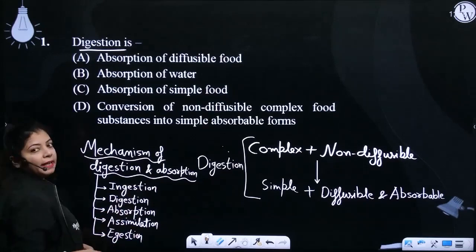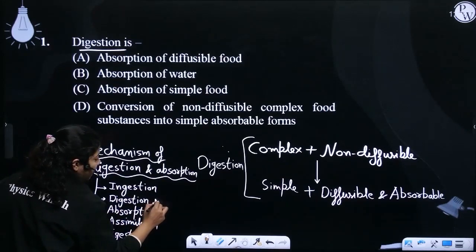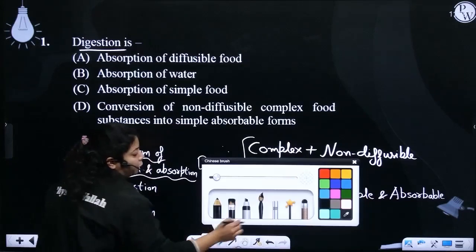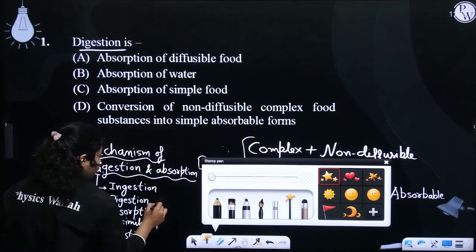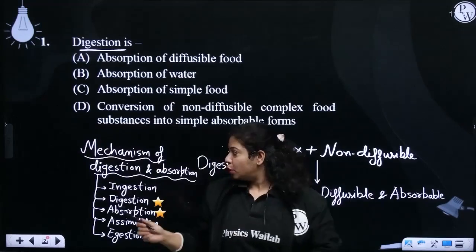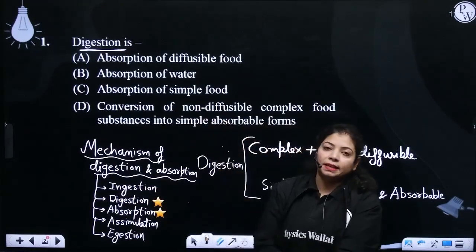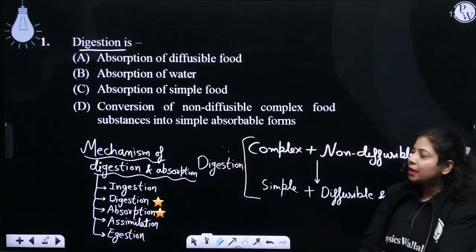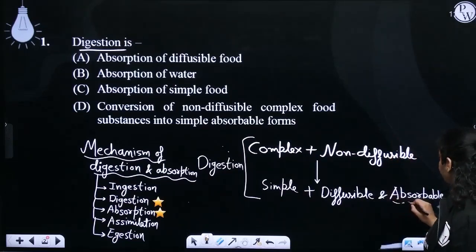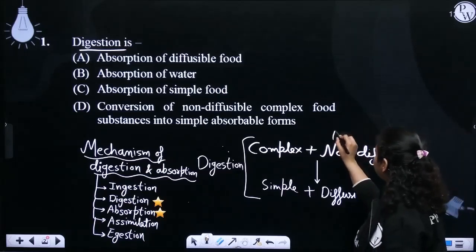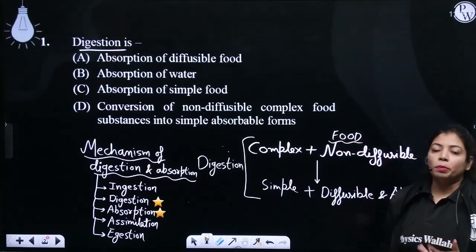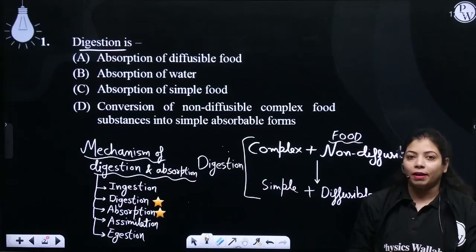आप इसमें देख सकते हैं कि digestion और absorption completely different processes हैं। यहाँ पर confuse नहीं होना है — one is digestion and another is absorption। Digestion और absorption different processes हैं, तो आप इसके options को अब देखना शुरू करें। बच्चा absorption और digestion में confused क्यों हो सकता है? इस word की वजह से — आपने food को absorbable form में break किया है।